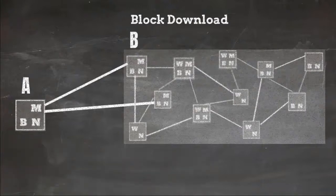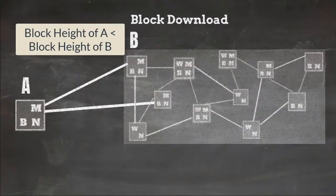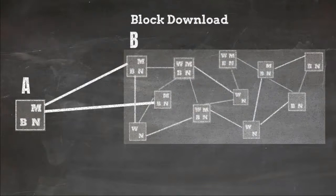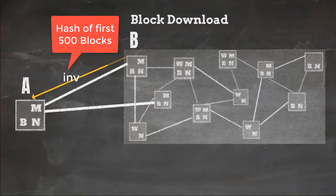So the version message which node A sends to node B will have block height of zero. When this message will go to node B, node B will know that block height of A is less than its own topmost block height. In this case node B will send inventory message which is nothing but the hash of the first 500 blocks.